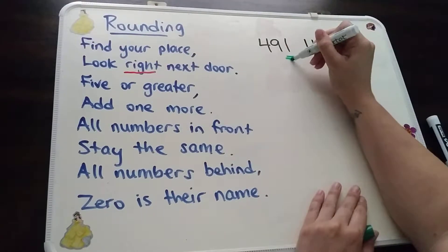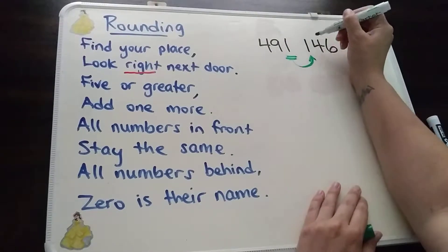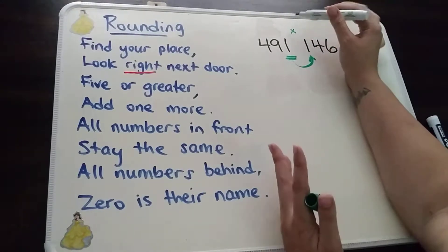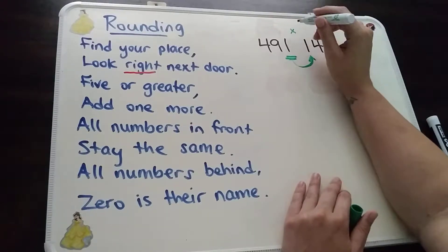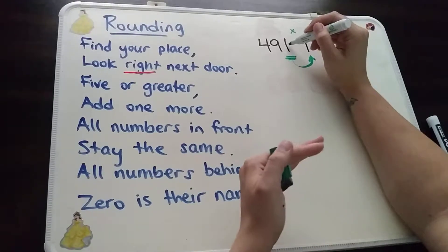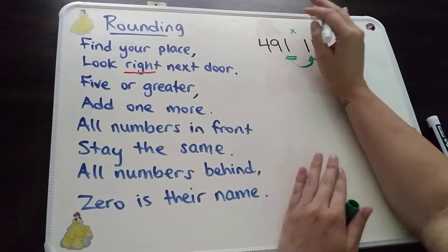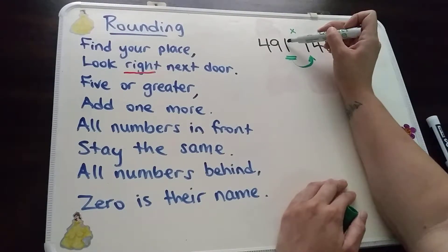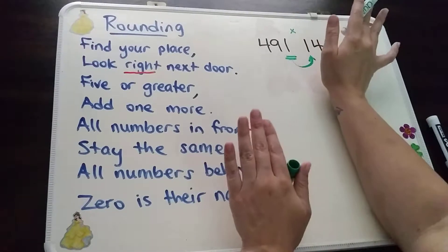Look right next door. Five or greater, add one more. I know one is not greater than five, so I don't have anything to do. I'm going to put a little X for myself to remind me that I'm not adding anything. Some people have the habit of saying they're going to round down — no, do not round down, because that makes you think this number has to be subtracted by one. We don't want to do that. We're just leaving it as is. Only if it's five or greater do you add one more. If it's not five or greater, you just leave it. Put a little X there to say stop, you don't have to change it.